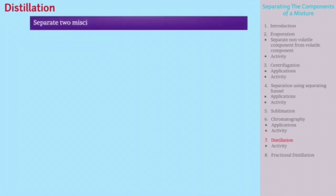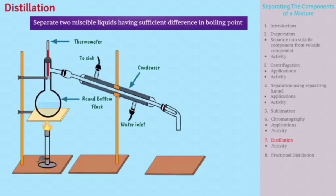Another method is distillation. This process is used to separate two miscible liquids having a sufficient boiling point difference. In the mixture, the liquid with the lower boiling point evaporates first and undergoes condensation and is collected in a container.